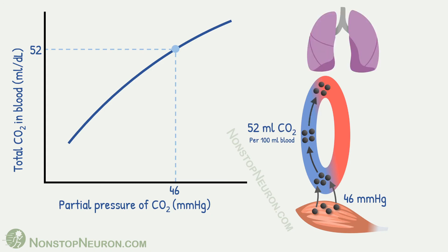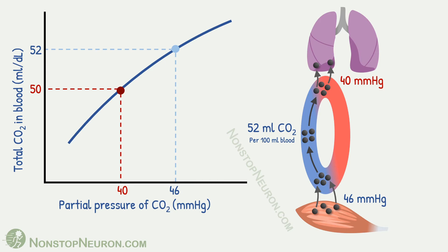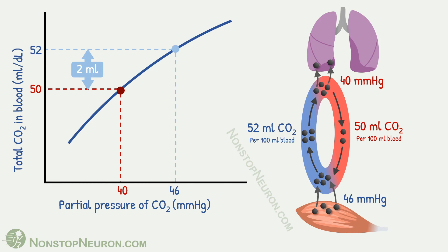Now, this blood reaches the lungs. Here, partial pressure of carbon dioxide is about 40 mmHg. Due to this lower partial pressure, carbon dioxide diffuses from blood into the lungs. It corresponds to this point on the curve. Here, carbon dioxide content is about 50 ml per 100 ml of blood. If this were the only thing that happens, arterial blood would contain 50 ml carbon dioxide per 100 ml blood, and that would mean only 2 ml of carbon dioxide is offloaded at the lungs.